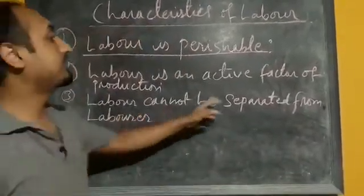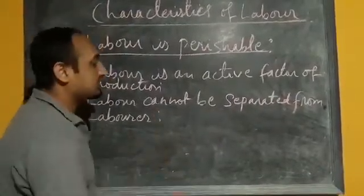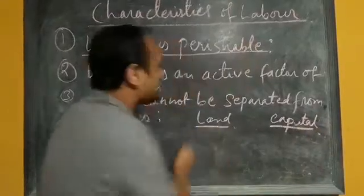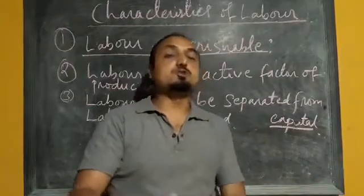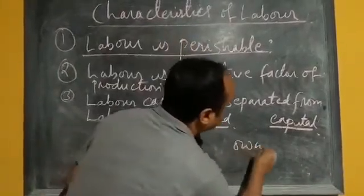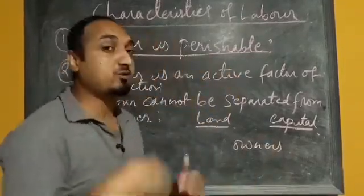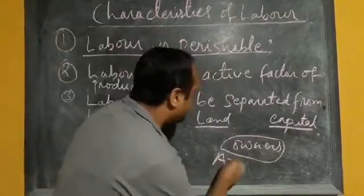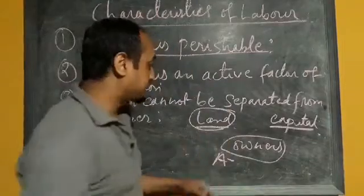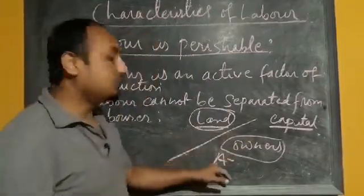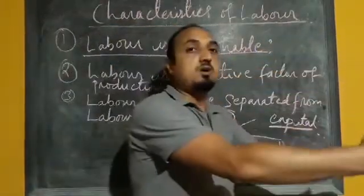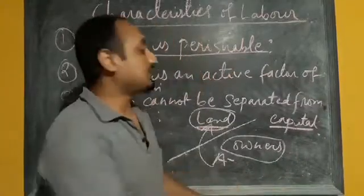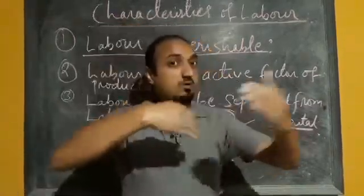The next characteristic is that labour cannot be separated from the labourer. Consider the example of land and capital — land and capital can be separated from their owners. Suppose person A is the owner of land. Person A can give his land for production, so the land and the owner can be separated. It is not necessary that the owner has to be present with the land for any productive purpose. The same case applies to capital — capital and owner can be separated.